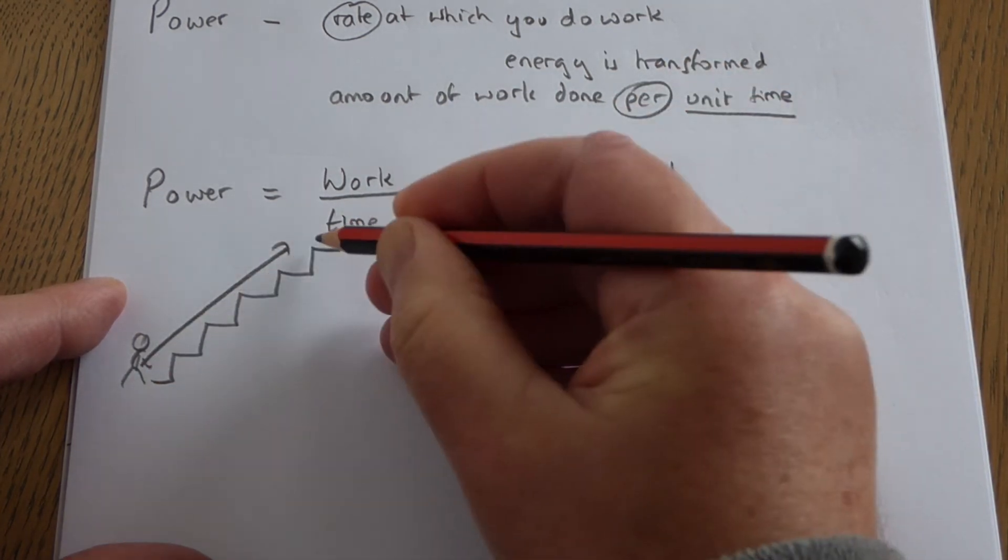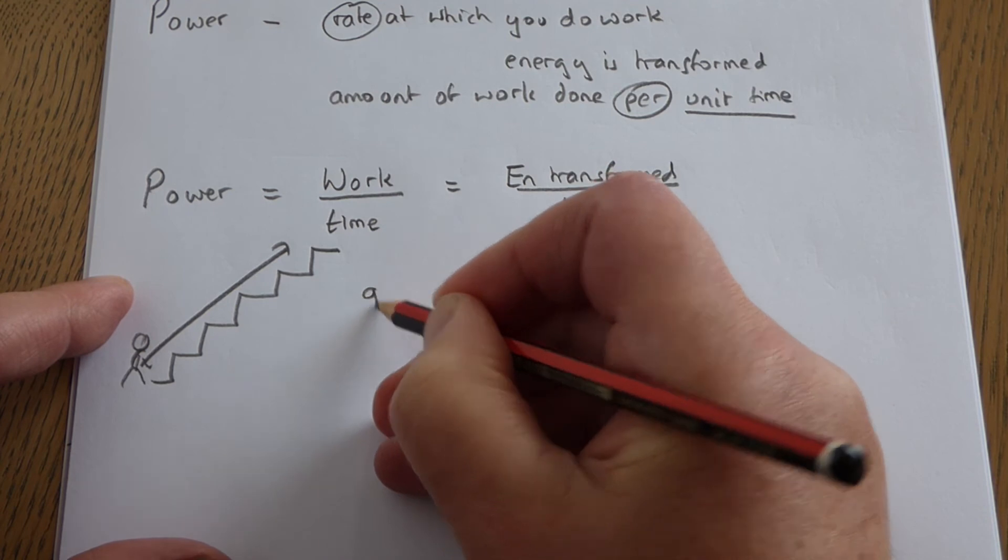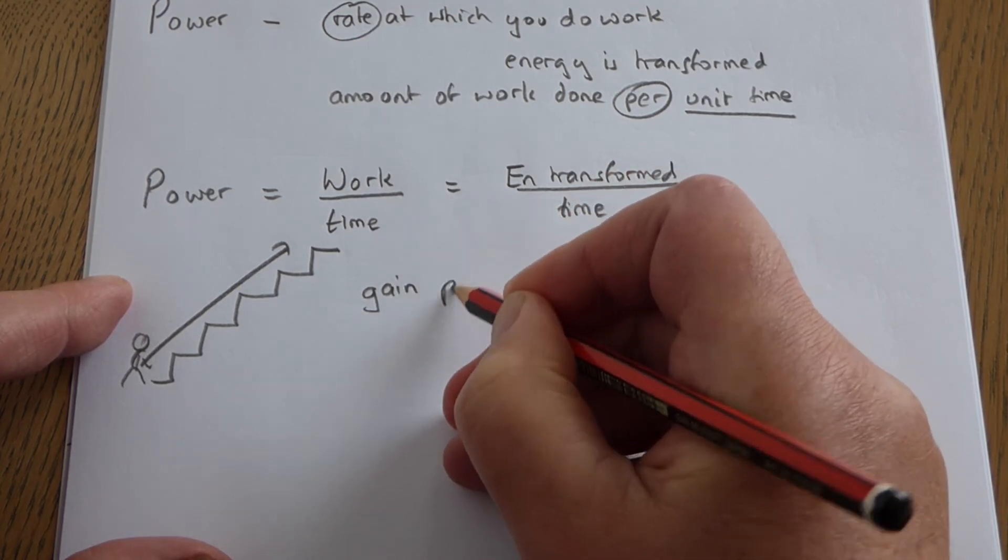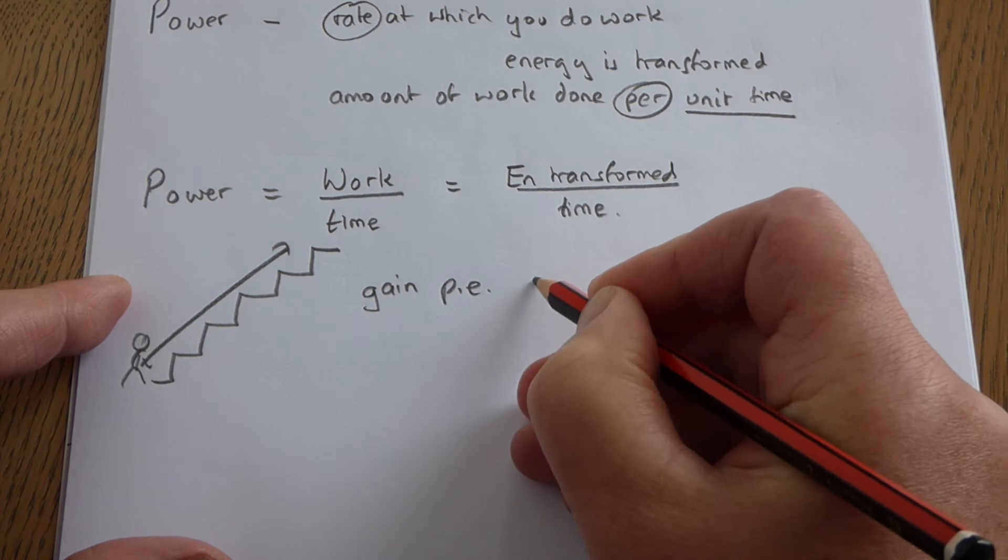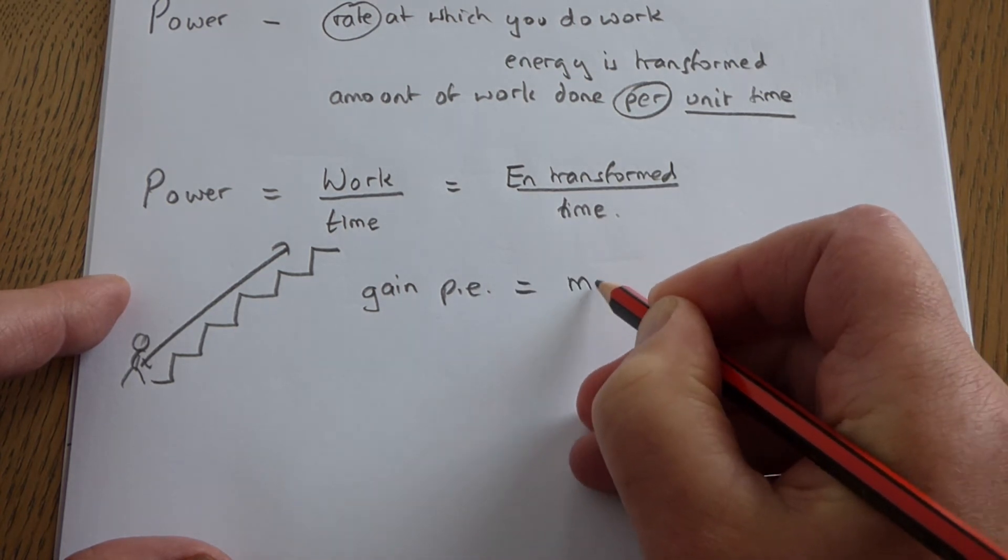And if you go upstairs, you gain gravitational potential energy. I'll just say PE for potential energy, and the formula for it is mgh.